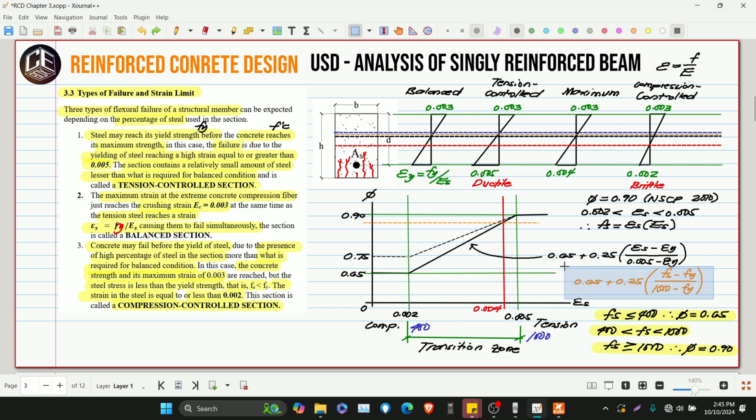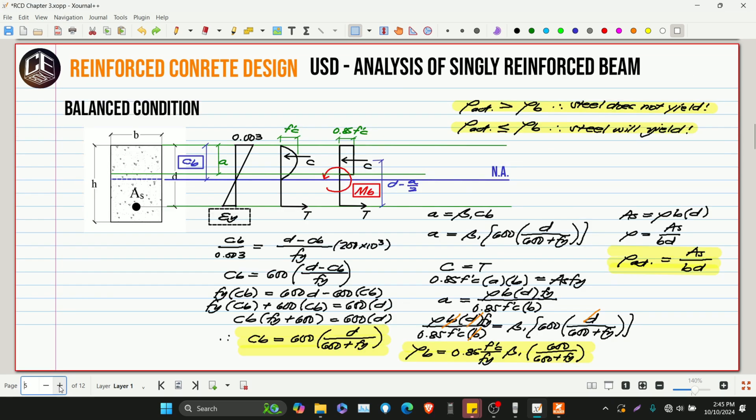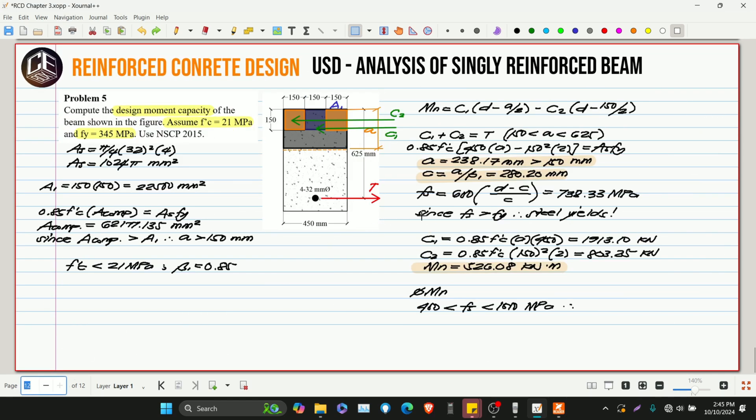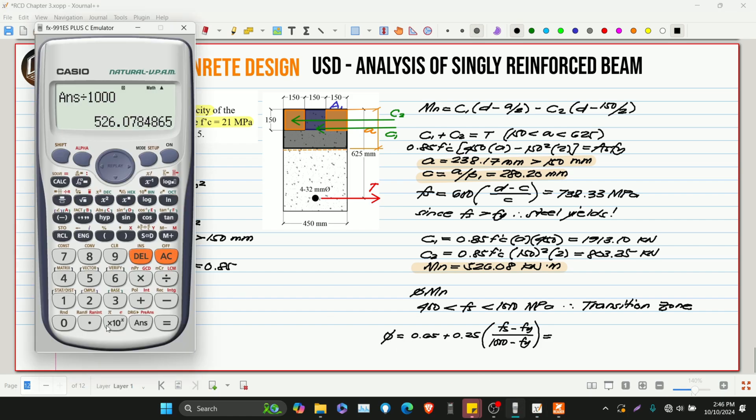So, this is the equation we'll use. Let's not solve for strain, let's just go with stress. So, therefore, we're under the transition zone. Let's solve for the reduction factor phi. This is equivalent to 0.65 plus 0.25 multiplied by FS 738.33 minus FY 345 over 1,000 minus 345. So, this is 0.80.